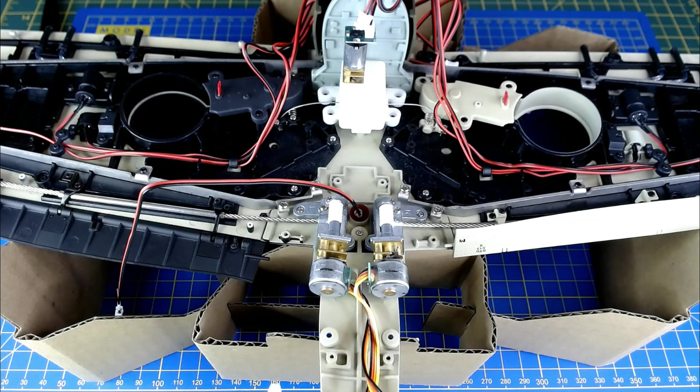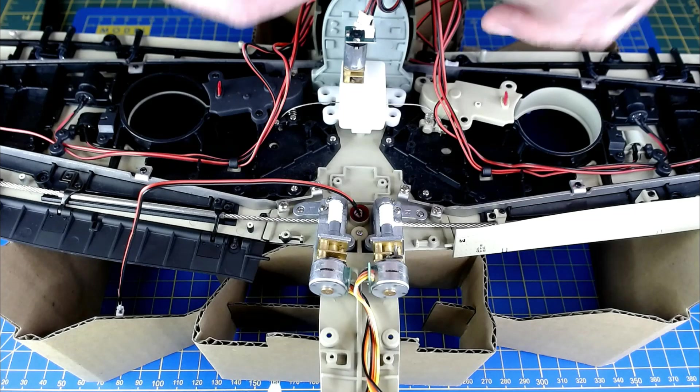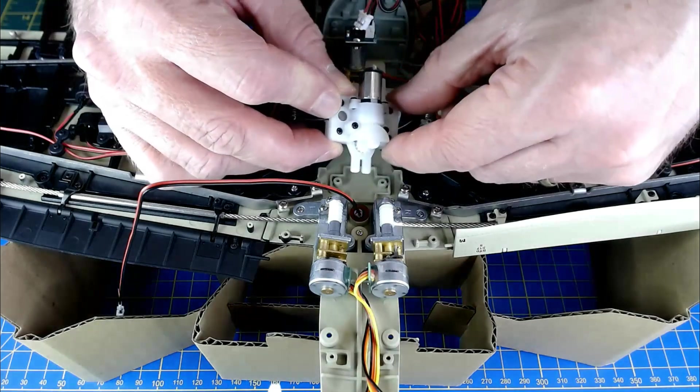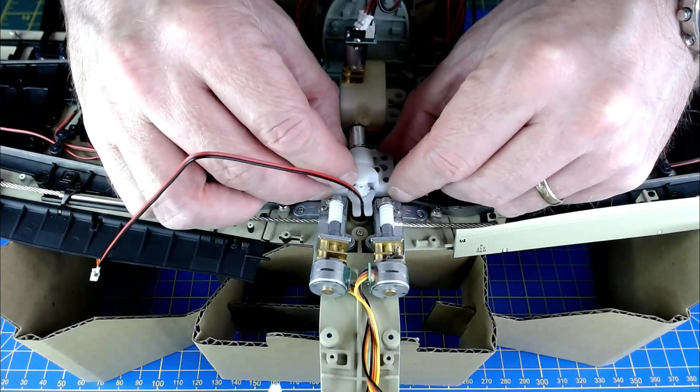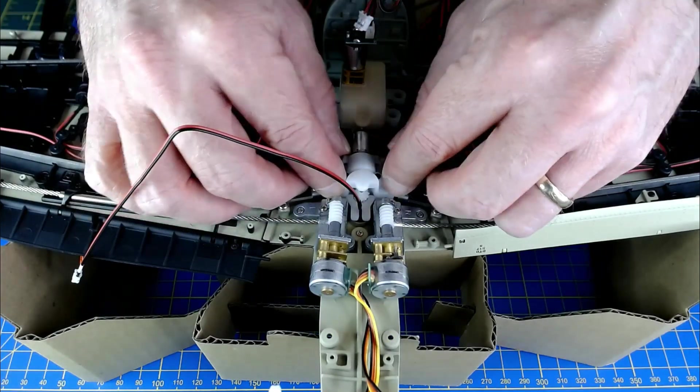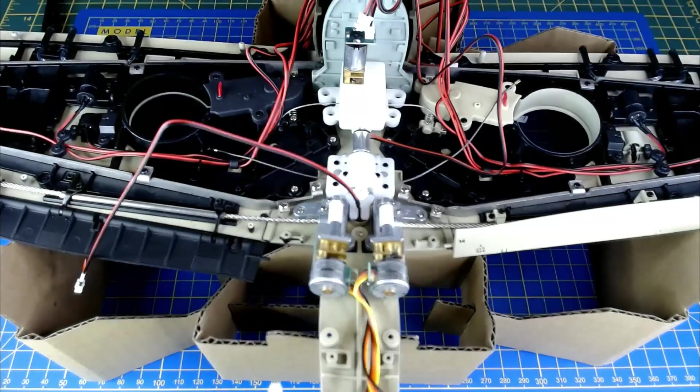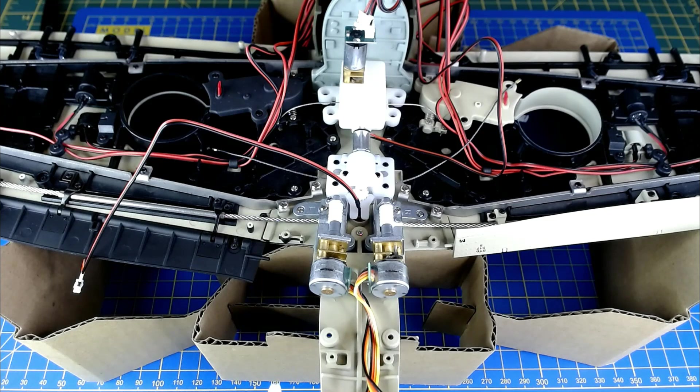So now we're bringing over the motor assembly and the cogs and everything that we just fixed. And then that's going to go into there, into this area here. And the red cable will go up against it. And then we're fitting that in with the two by four screws, silver ones.